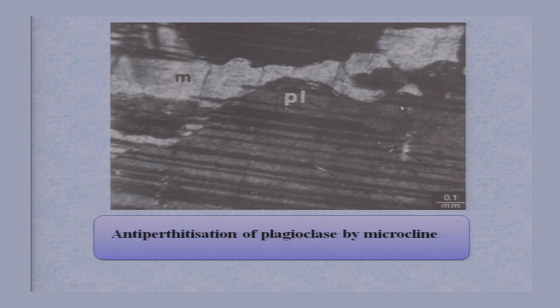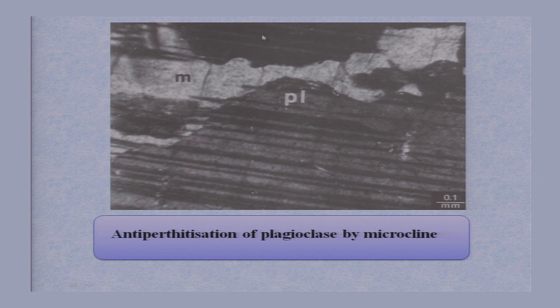What is antiperthitization of plagioclase by microcline? Here you have a large plagioclase crystal showing lamellar twinning. The M written here indicates microcline, present because of antiperthitization — alteration of plagioclase. In this irregular zone, you again see a plagioclase crystal, but in between it you have a gray-colored M. M is an antiperthite: the host is different here. This shows an antiperthitic relationship.